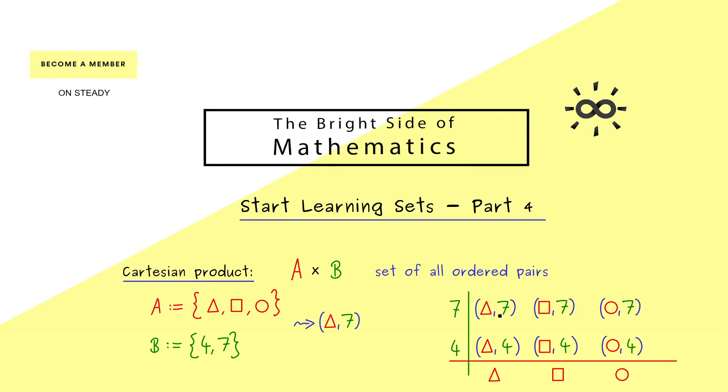Hence we get out a table with six positions, and each position corresponds to one uniquely given pair. So after filling in the table, we have the six elements and know that A times B, the Cartesian product, is exactly the set with these elements. Okay, most of the time this is enough for understanding the Cartesian product.